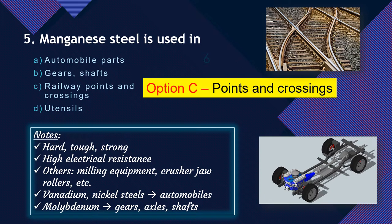Manganese steel is also used in milling equipment, crusher jaws, and rollers. Automobile parts are made of vanadium and nickel steels. Gears, axles, and shafts are made of molybdenum alloy steel. So: manganese steel → railway points and crossings; vanadium/nickel → automobile parts; molybdenum → gears, shafts, axles.